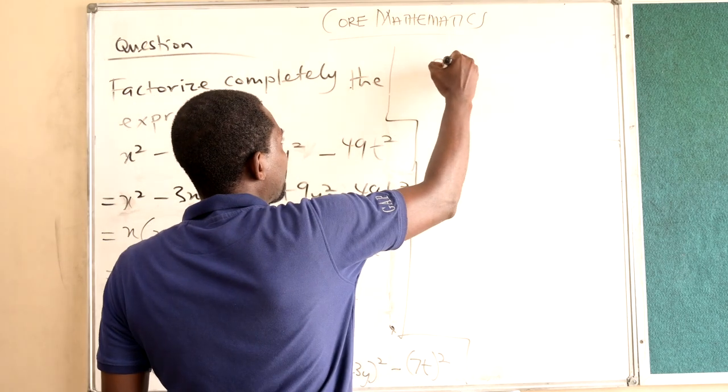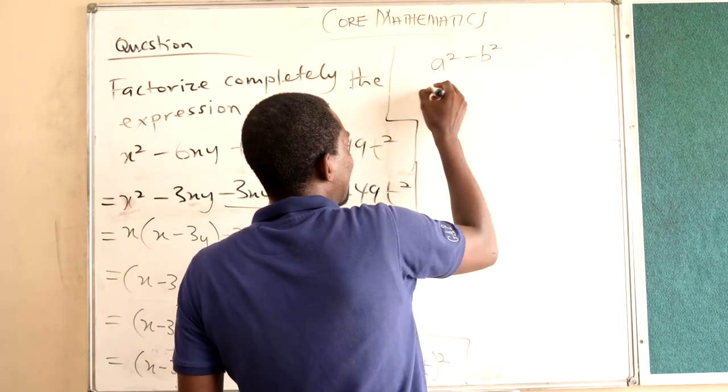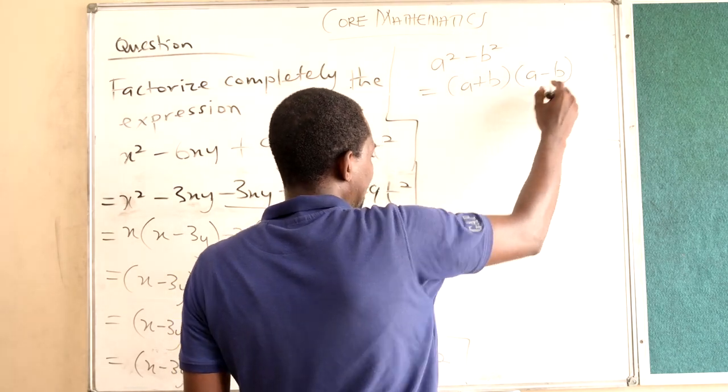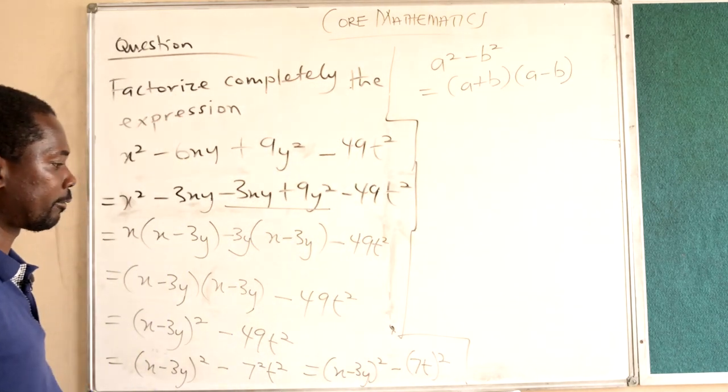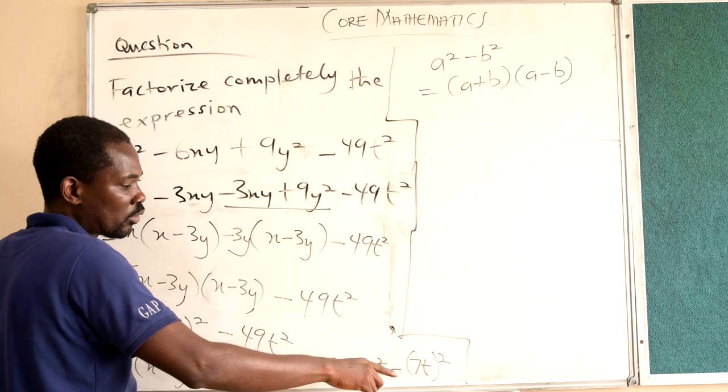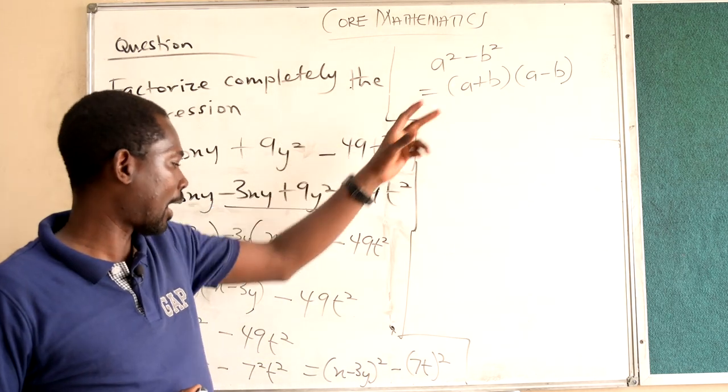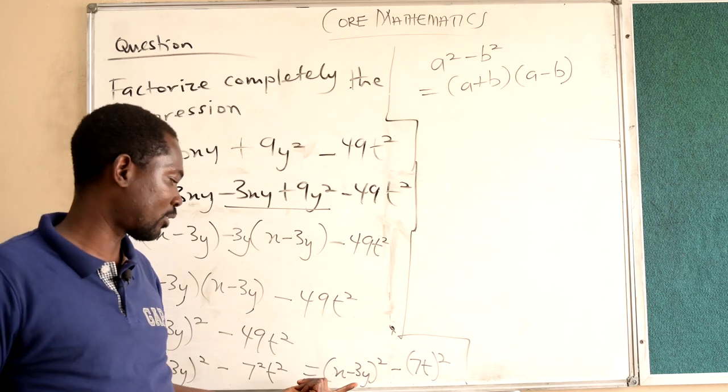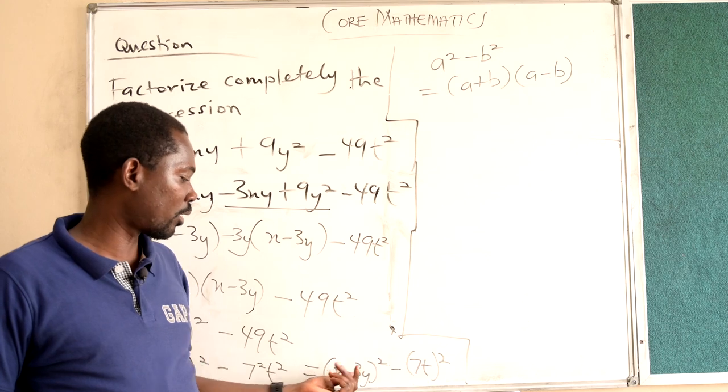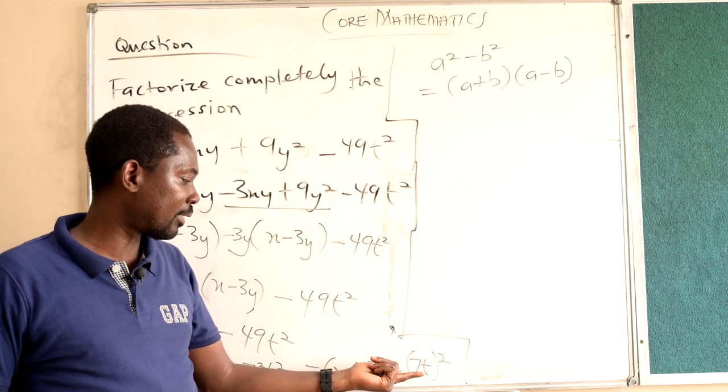When we have difference of two squares, we can write it as the first number plus the second number, times the first number minus the second number. Our first number is x minus 3y, and our second number is 7t. So in the first bracket, we add the first and the second number: x minus 3y plus 7t.